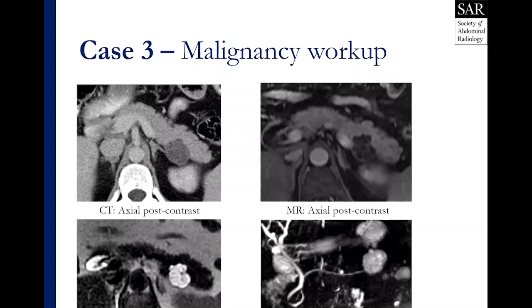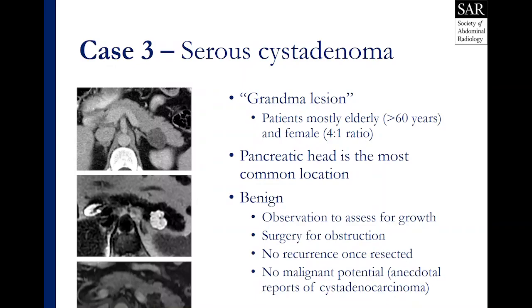Here's case 3 — a patient for a malignancy workup. CT and MRI axial post-contrast images show a focal lesion in the posterior distal pancreatic body and tail, with axial T2-weighted images and a coronal MRCP also shown. This is an example of a serous cystadenoma. For those who have heard the term grandmother-mother-daughter lesion, this is the classic grandmother lesion — named so because most patients are elderly, over 60 years old, and most are female at about a 4 to 1 ratio. The pancreatic head is the most common location, even though this example shows a serous cystadenoma in the pancreatic tail.